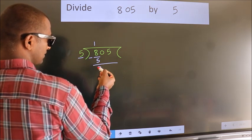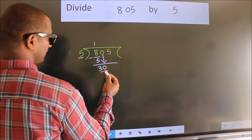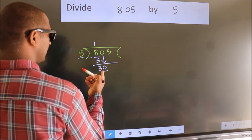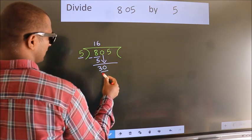After this, bring down the beside number. So, 0 down. So, 30. When do we get 30 in 5 table? 5, 6, 30.